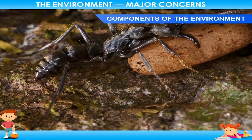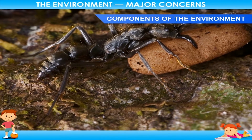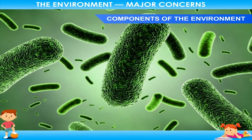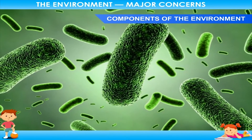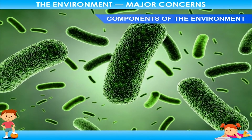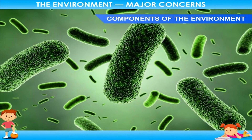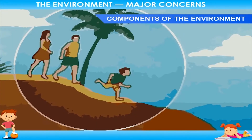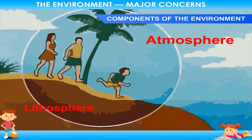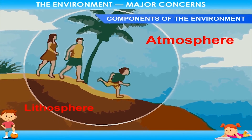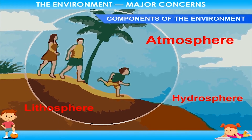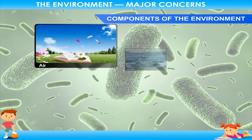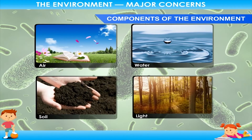Abiotic components are the non-living factors of the environment. These are obtained from the lithosphere, atmosphere, and hydrosphere. Examples include air, water, soil, and light.